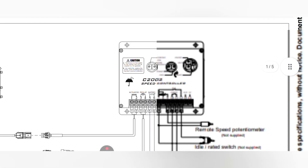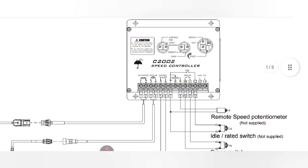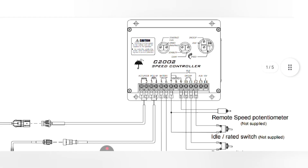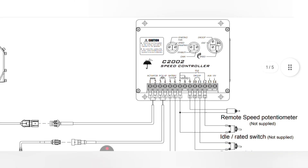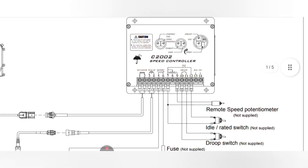This completes the wiring diagram explanation of the C2002 controller. If you have any further questions, please write a comment in the comment section. If you need the video file for this controller, write your email in the comments and I will provide it. Thanks for watching — see you next time. Allah Hafiz.